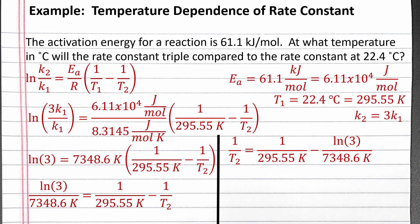If we plug the numbers on the right into our calculator, we should get 0.003234 Kelvin to the negative first, which equals 1 divided by T2. To solve for T2, we invert both sides. So T2 equals 1 divided by 0.003234, which is 309.2 Kelvin.